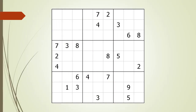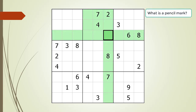Consider the following Sudoku in progress. The basic gist of using Snyder notation is it is a guideline for how you place pencil marks in a Sudoku puzzle. Before we begin talking about the notation, let's do a quick review on what is a pencil mark. To explain what is a pencil mark, we will concentrate on cell 3,6, now outlined in black.